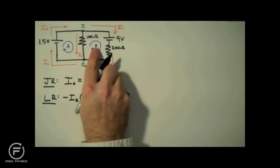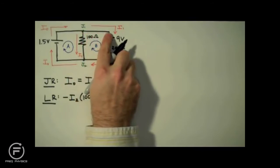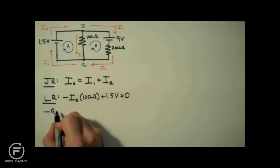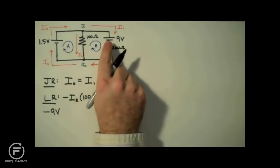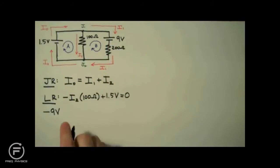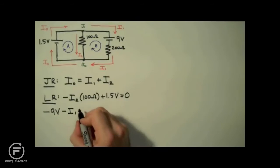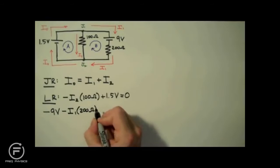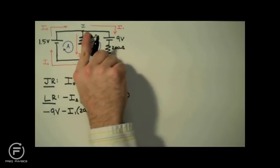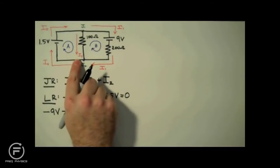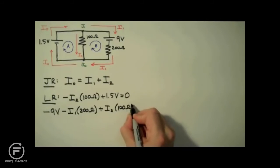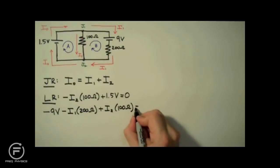Next we use the loop rule to analyze loop B. Starting again in the upper left-hand corner, we travel clockwise to the first component, a 9 volt battery, traveling from high to low — that means a voltage drop, minus 9 volts. Continuing around loop B, we get to the 200 ohm resistor. We're traveling clockwise, which is with the direction of I1 — that indicates a voltage drop, minus I1 times 200 ohms. Then we continue up the middle leg to the 100 ohm resistor. Here we're traveling up the leg while the current travels down — a voltage lift — so I write plus I2 times 100 ohms. We complete loop B and set this equal to zero.